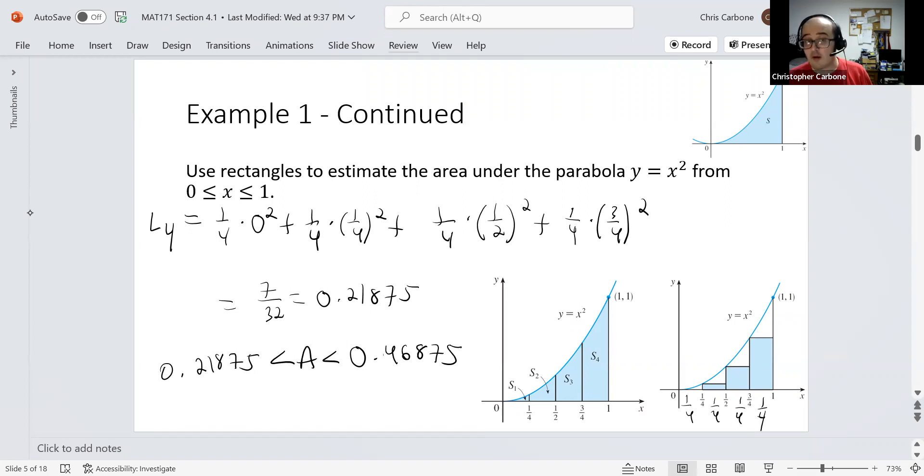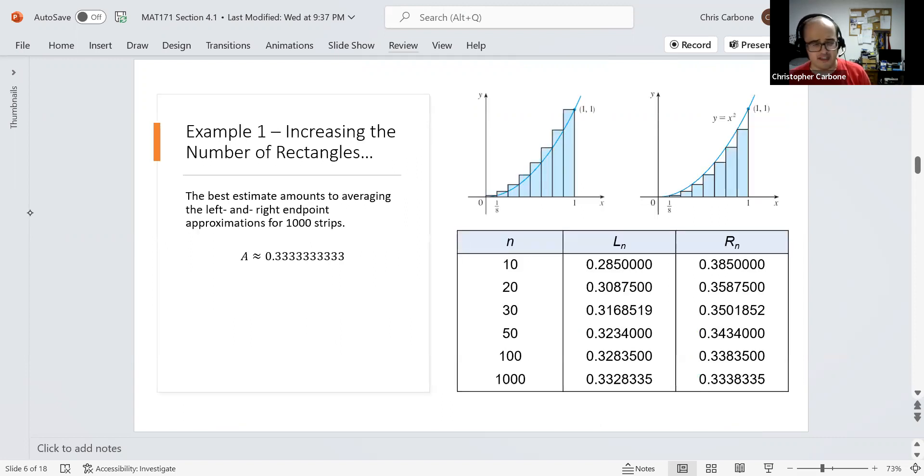One way that we could go through this and actually get something meaningful is to start increasing the size of each of these strips. This is just based on 4, and as you can see, 4 doesn't really do that good of a job. The pictures I have here in the upper right-hand corner use n strips or rectangles, and as you can see, the overestimation and underestimation is getting smaller and smaller.